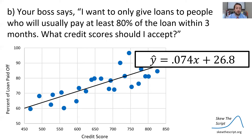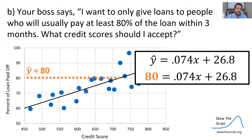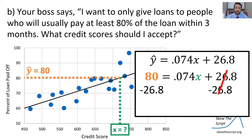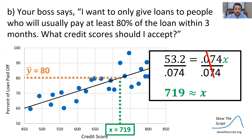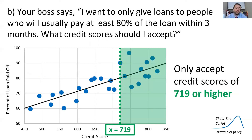Now let's turn to the next question where your boss says: I want to only give loans to people who usually pay at least 80% of the loan within three months — what credit scores should I accept? In this case, we set y-hat equal to 80. We subtract both sides by 26.8, getting 53.2 equals 0.074x, then divide by 0.074, and we get x is about 719. So if we only accept credit scores of 719 or higher, those are the individuals our model predicts will pay at least 80% of their loan within three months.